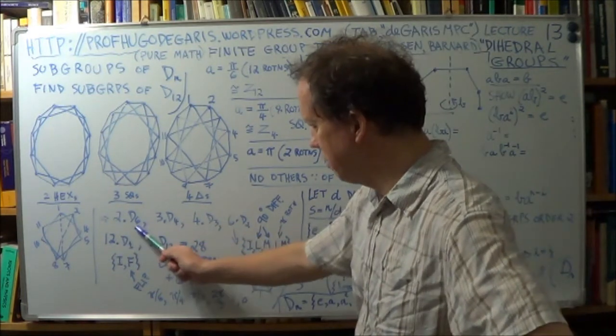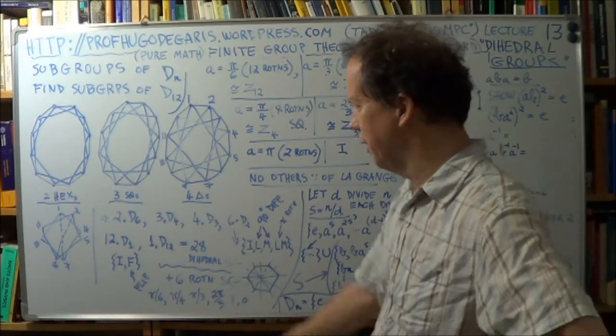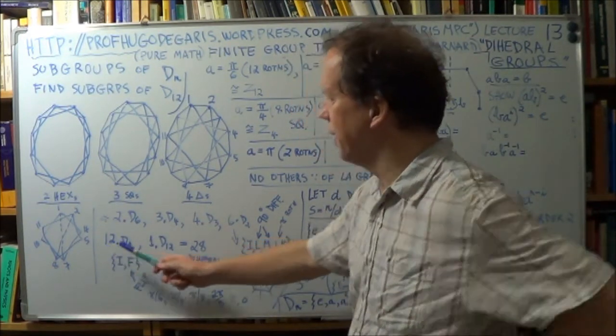And, they're all, what? Two sixes are twelve, three fours are twelve, four threes are twelve, six twos are twelve.